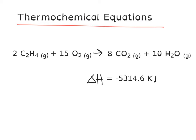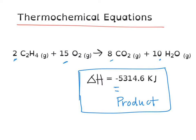What is saying here is that when this reaction occurs, you have a negative 5,000 and change kilojoules of energy being given off. So because it's negative, this is a product. And we can treat it as such when we're doing stoichiometry. So just like when we're doing the ratios of 2 to 15 to 8 to 10, this value here now becomes part of the reaction.